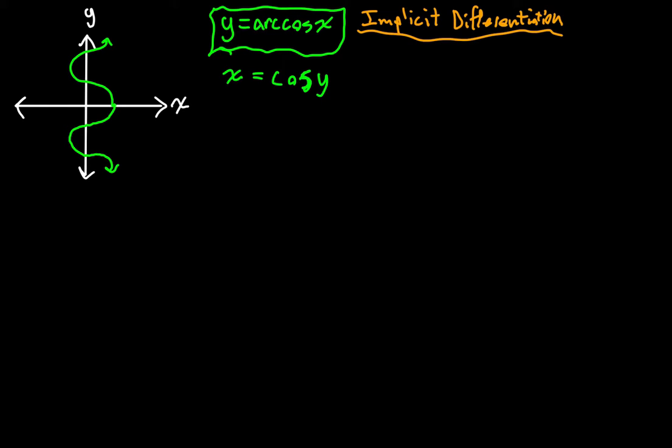All right, so we are going to say derivative with respect to x of x is equal to the derivative with respect to x of the cosine of y. All right, so that's the same as saying one is equal to, well, what's the derivative with respect to x of the cosine of y?